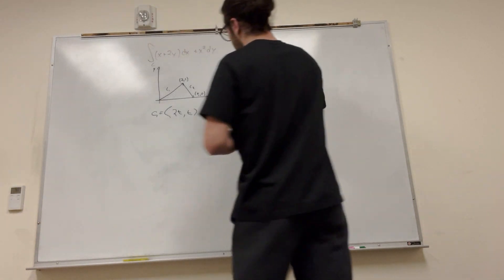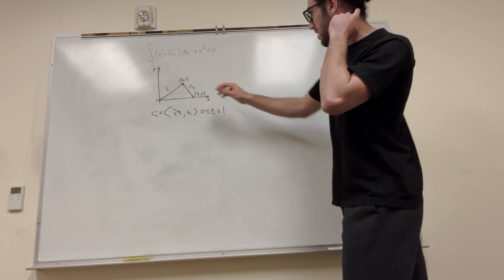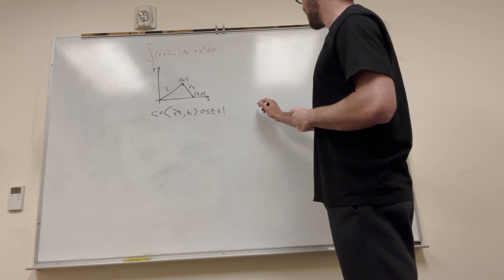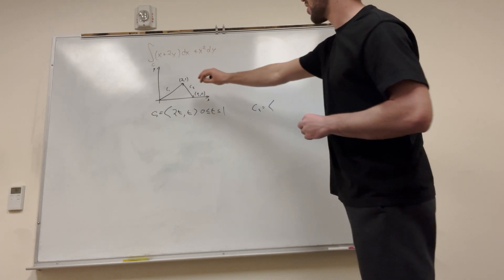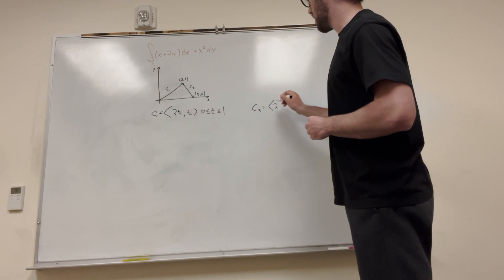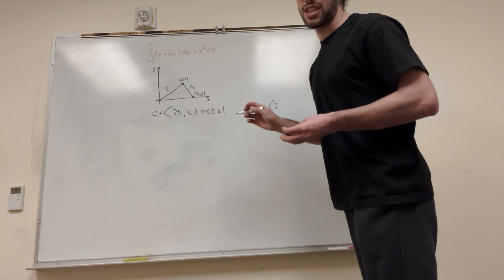How about c2? c2 is this thing. Okay, so it starts at (2,1), so we know about c2 it's going to have to go something like this. It's going to have to start at 2, and then you see that it goes... never mind, it doesn't go negative t. x goes forward 1.